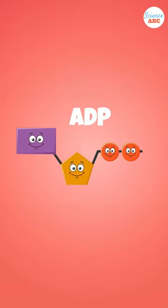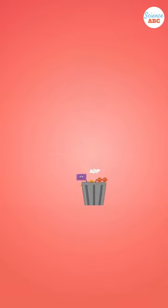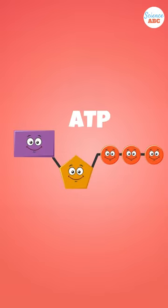This 2-phosphate molecule is ADP. ADP will be recycled to make more ATP by adding another phosphate to it.